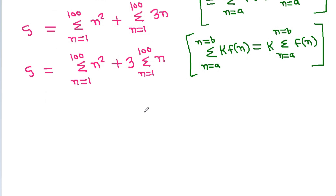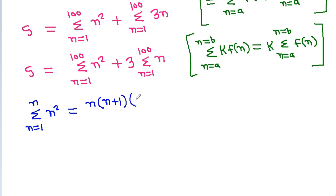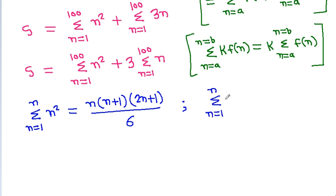The summation from n equals 1 to n of n squared is equal to n times (n plus 1) times (2n plus 1) divided by 6. And the summation from n equals 1 to n of n is equal to n times (n plus 1) divided by 2.